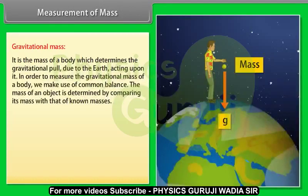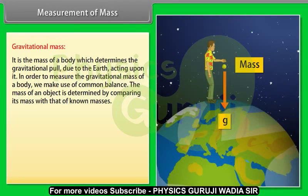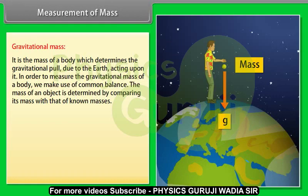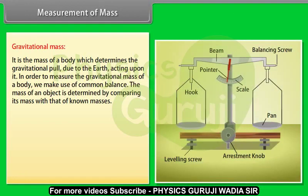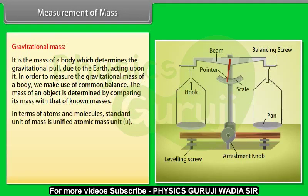Gravitational mass: It is the mass of a body which determines the gravitational pull due to the earth acting upon it. In order to measure the gravitational mass of a body, we make use of common balance. The mass of an object is determined by comparing its mass with that of known masses.